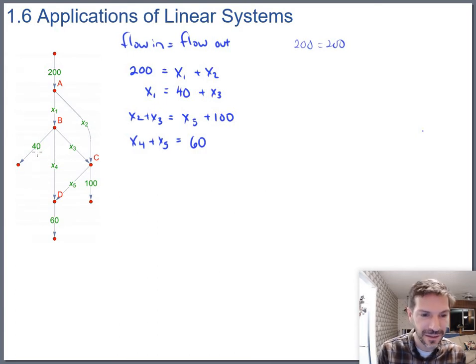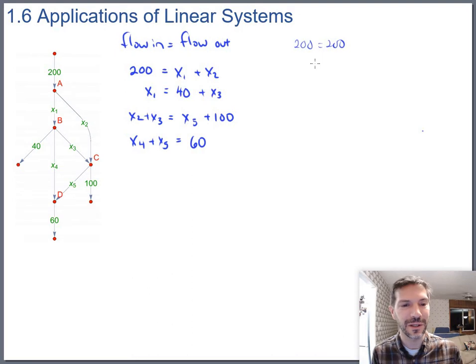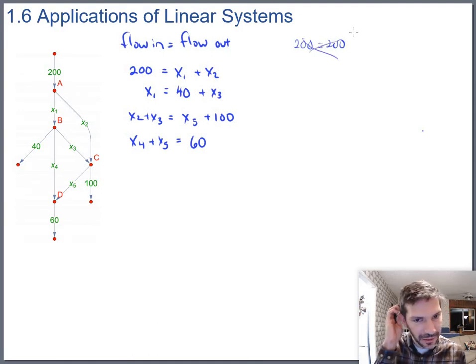But sometimes there's an unknown. Like if this 40 had been an x6, then we would need to encompass that in the equations by talking about entering the overall network and leaving the overall network. Like I said, in this case, we don't need that particular equation.